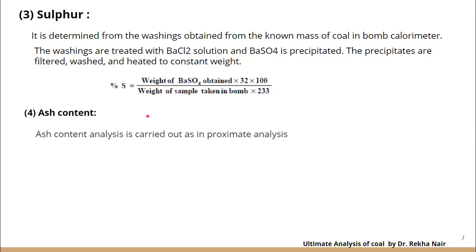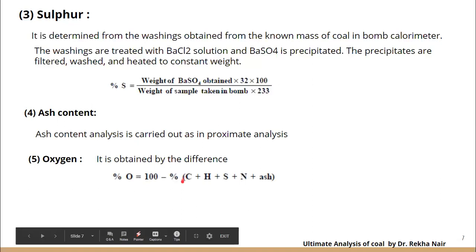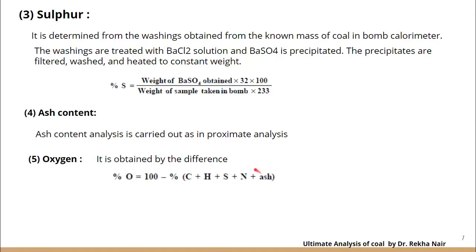Ash content analysis is carried out as in the proximate analysis discussed in the previous video. For oxygen, it is obtained by difference: percentage oxygen = 100 − (% carbon + % hydrogen + % sulfur + % nitrogen + % ash).